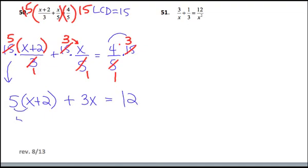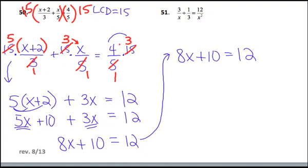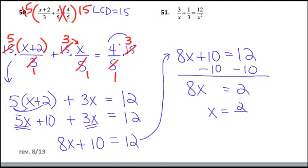Now I use algebra skills. I distribute: 5 times x plus 2 gives 5x plus 10. Collecting like terms on the left, 5x plus 3x is 8x. So I have 8x plus 10 equals 12. Subtracting 10 from both sides gives 8x equals 2. Dividing both sides by 8, and reducing, x equals 1 quarter.